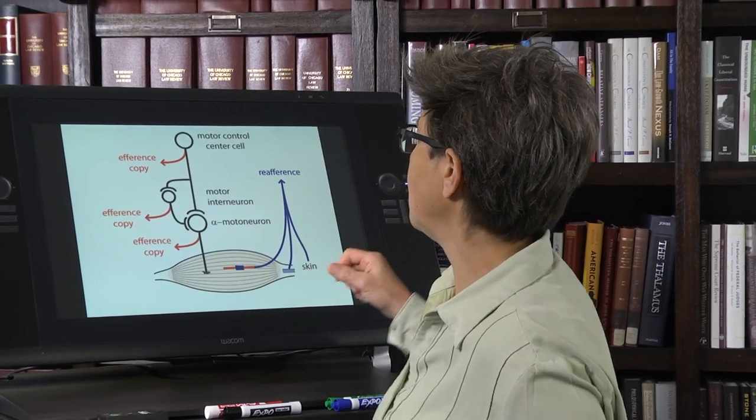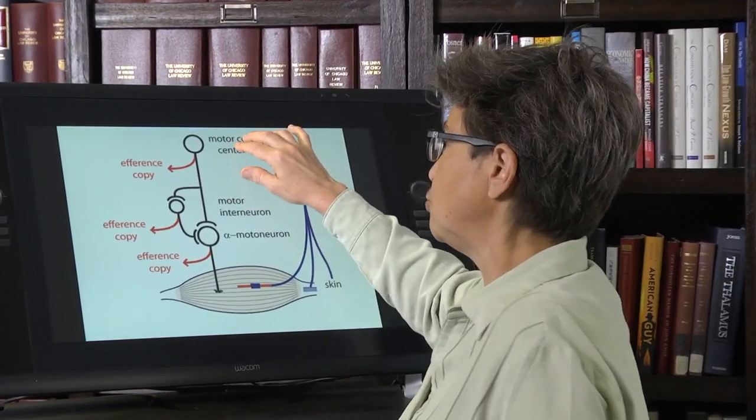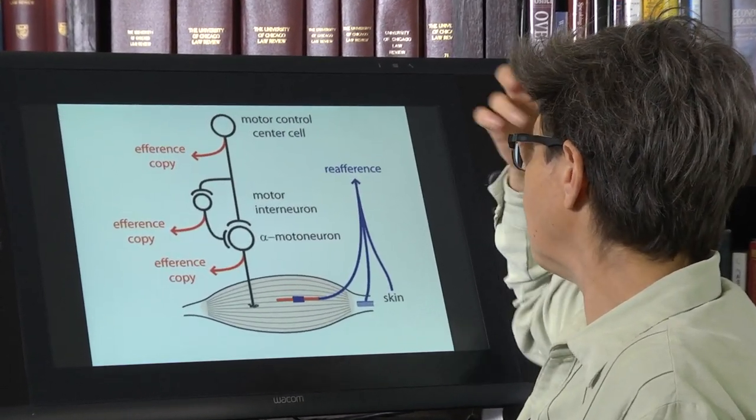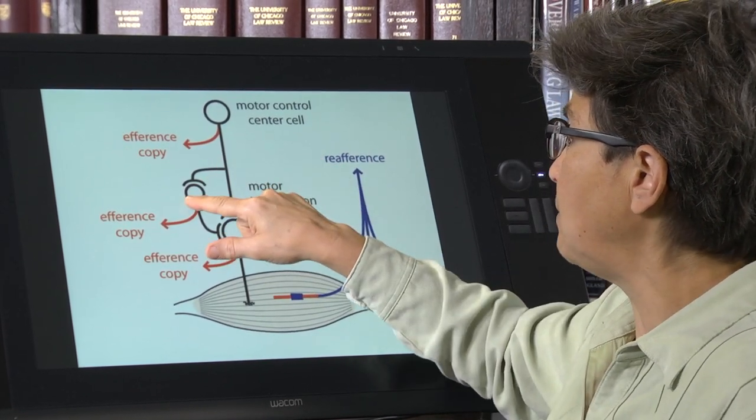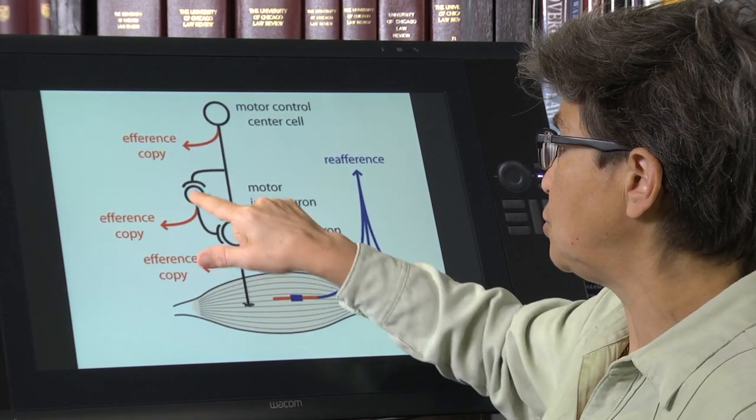The signal that tells us about the intended movement is called efference copy. Here we go. Here is a motor control center and it sends information off to a motor, alpha motor neuron. It may also send information to interneurons.